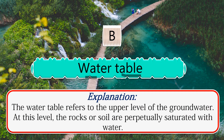The water table refers to the upper level of groundwater. At this level, the rocks or soil are perpetually saturated with water.